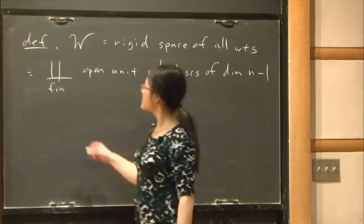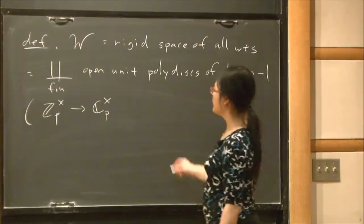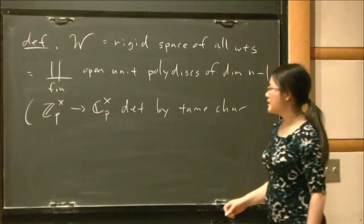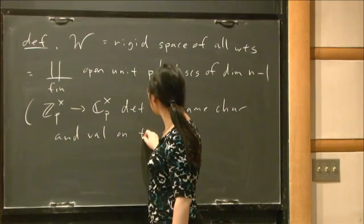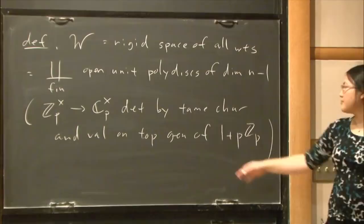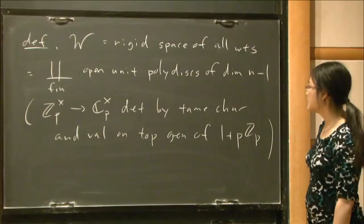The reason for the polydisc structure is that a character from C_p^× to C_p^× is determined by a tame character — a character of Z/pZ_p — and the value of the character on a topological generator of 1 + pZ_p. The value on the topological generator can be anything in an open unit disk, and you get one disk for each tame character. That's our weight space.